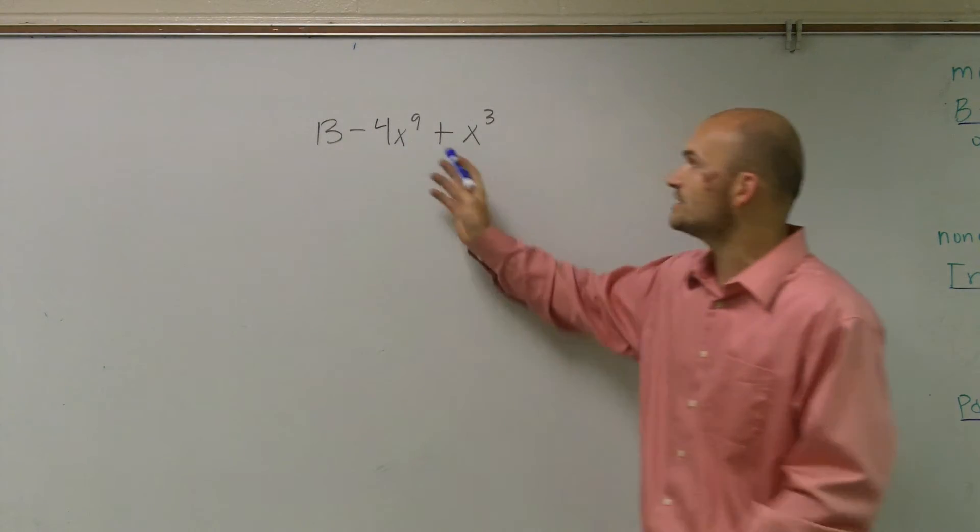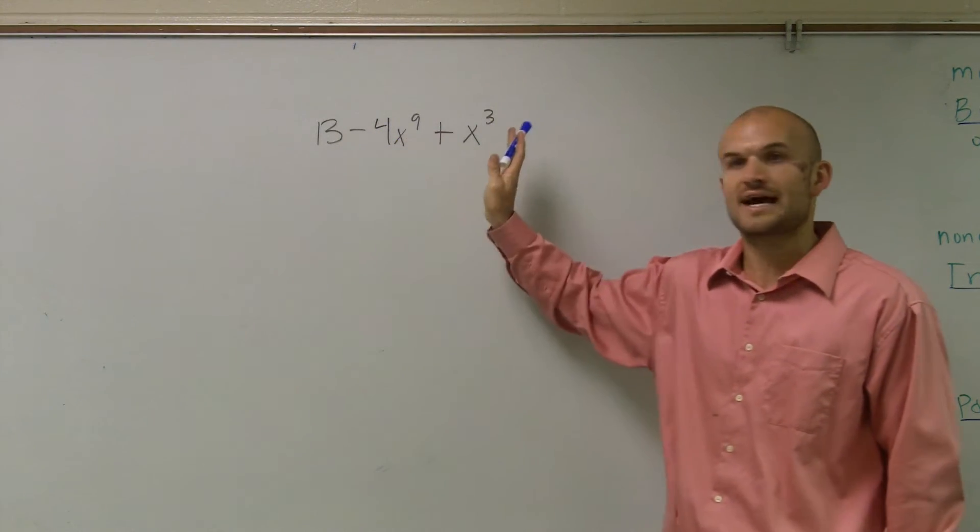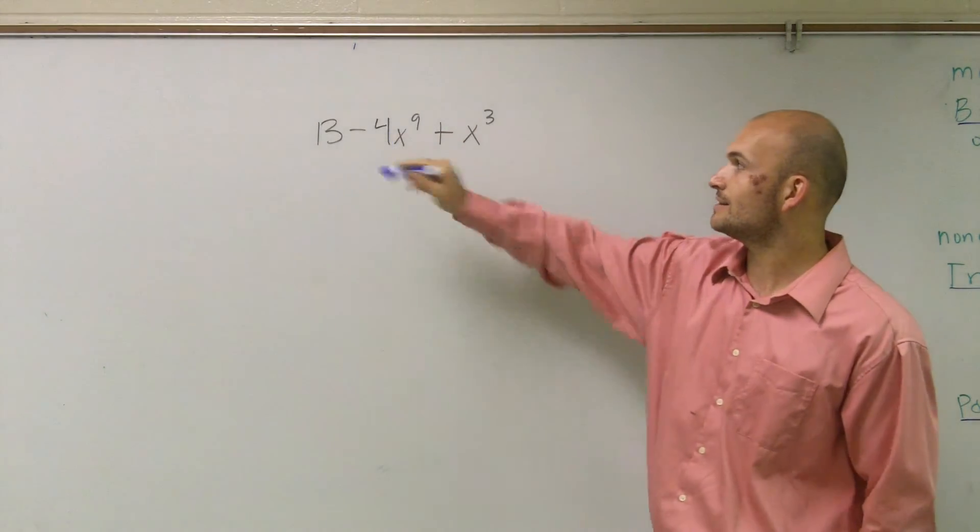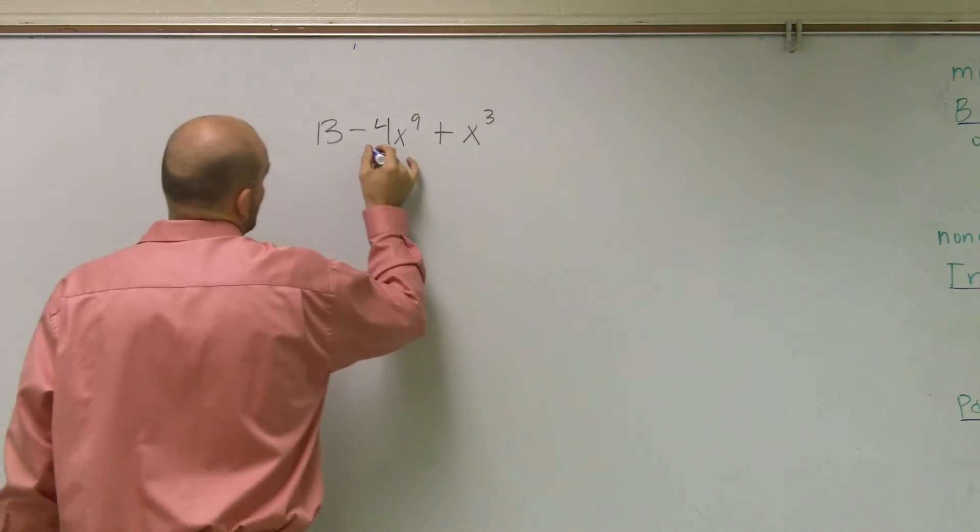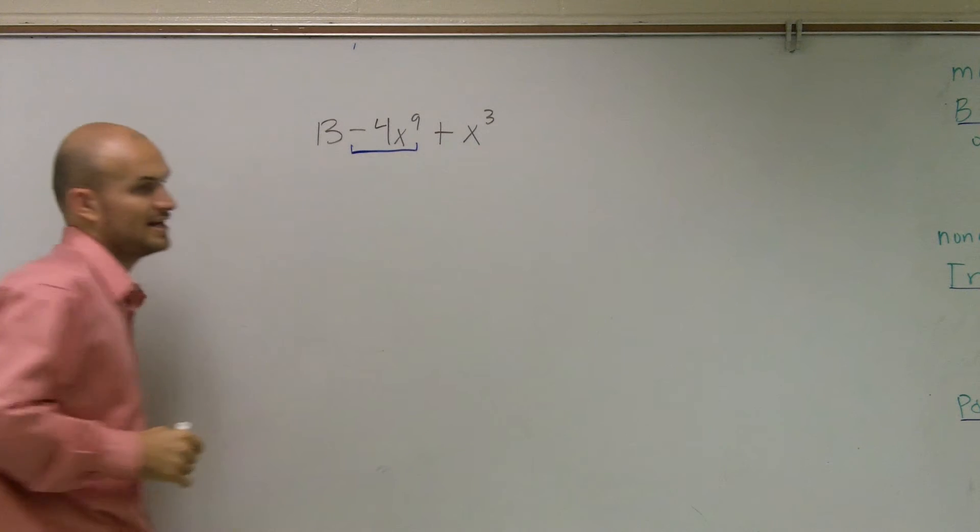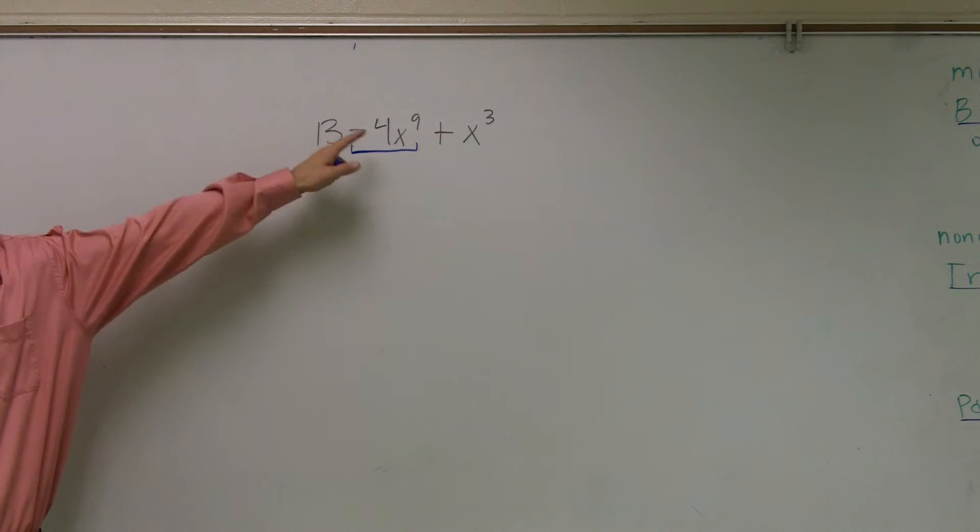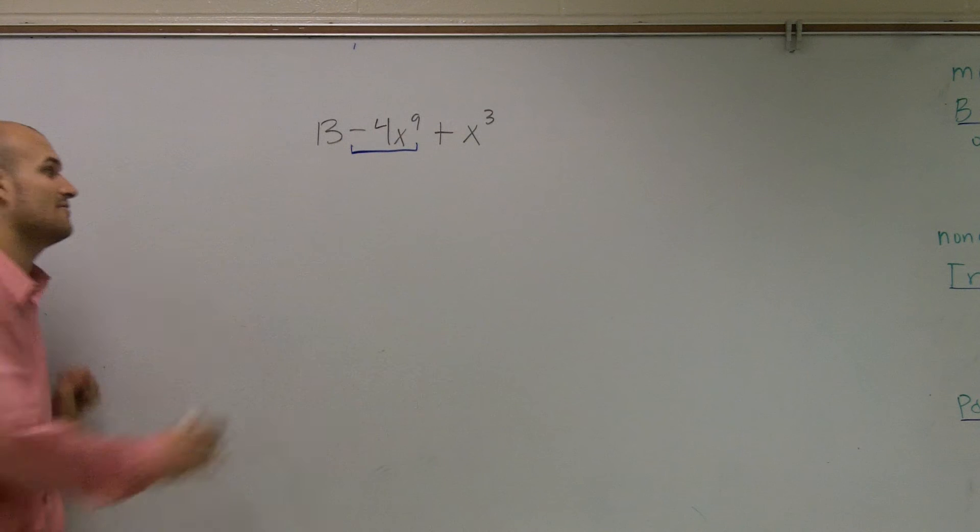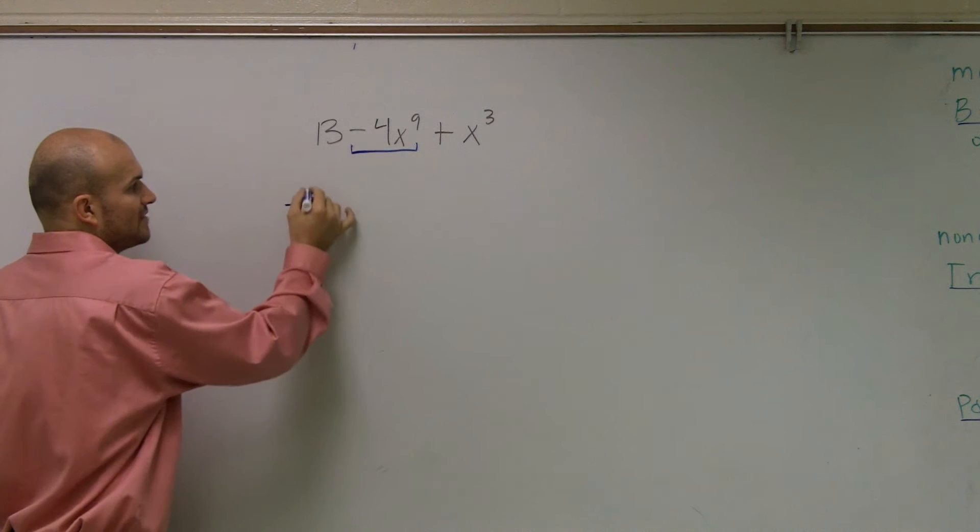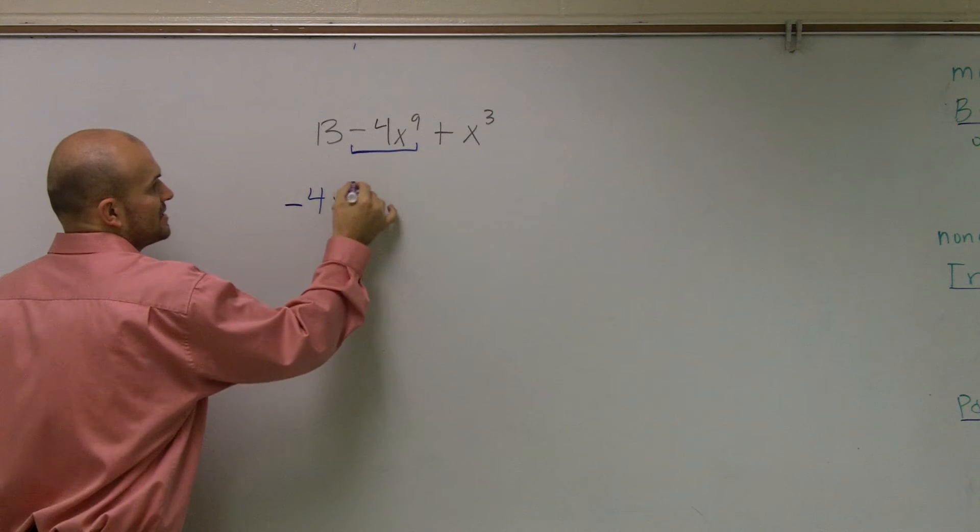I determine which term has the largest exponent. You can see that negative 4x to the 9th has the largest exponent, which is 9. So I place that first: negative 4x to the 9th.